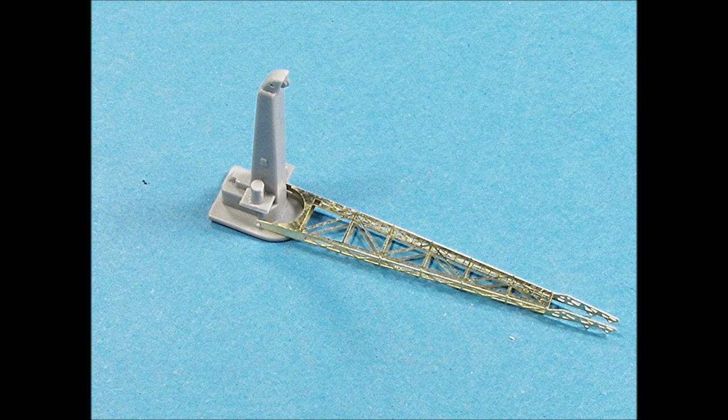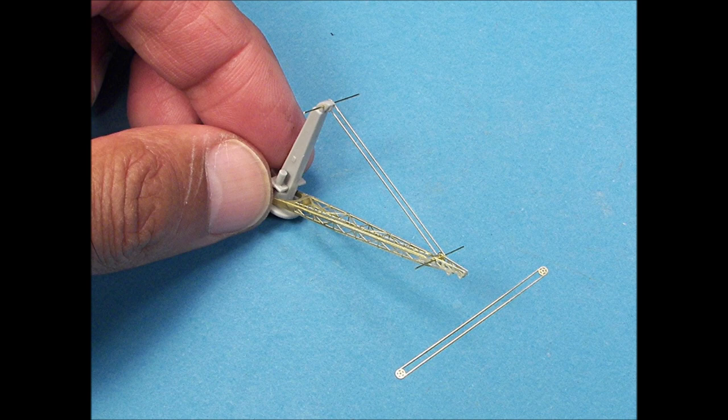The Gold Metal Model's cranes are designed to fit into the positioning stubs located at the base of the kit's vertical crane pedestals. To set the crane cables, drill a hole through the top of each pedestal and pin the cable parts into place with 0.012-inch diameter brass rod.